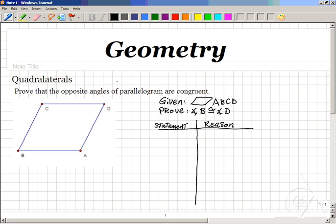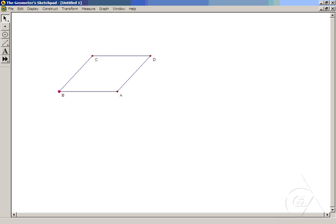In the subject of quadrilaterals within geometry, we'd like to prove that two opposite angles of a parallelogram are congruent. To show that this is indeed always true,